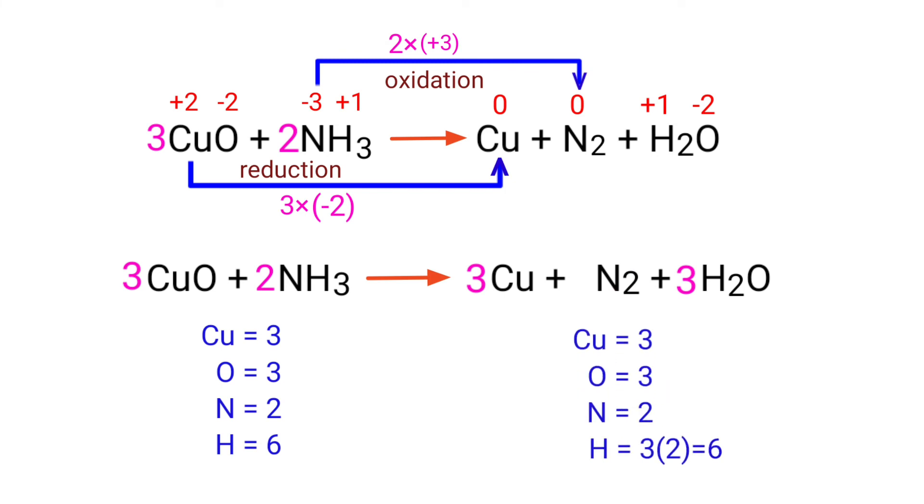The equation is now balanced. There are 3 copper atoms, 3 oxygen atoms, 2 nitrogen atoms, and 6 hydrogen atoms on both sides.